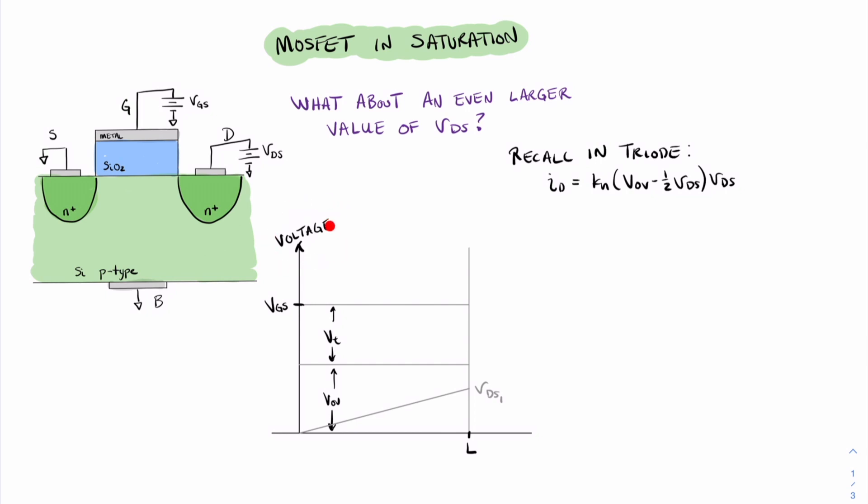Again, we're going to illustrate this in this graph where we have plotted voltage on the vertical axis and distance on the horizontal axis. For reference, I have put the line here that we had from the previous discussion on triode mode. Now, as we increase the value of VDS, we can see that there becomes a critical point when VDS equals the value of VOV. And that value, when VDS equals VOV, gives rise to a new mode that we call saturation.